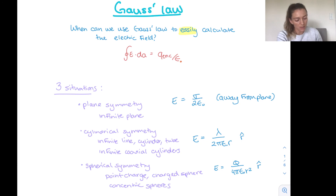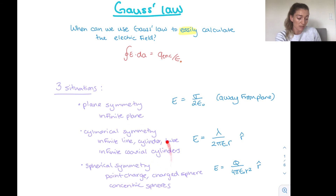Gauss's law is always true but only useful in the three situations with sufficient symmetry where we know the direction of the electric field everywhere beforehand and can find a Gaussian surface where E is constant. In the next video, we'll go through more Gauss's law problems using some of these variations.